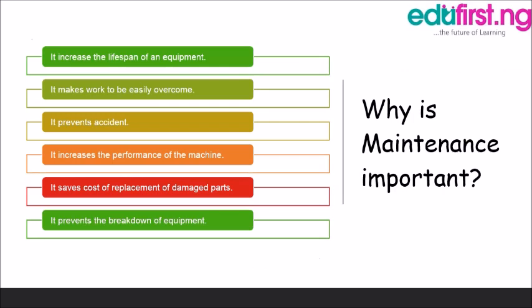Why is maintenance important? Maintenance is important because: it increases the lifespan of equipment; it makes work easier to carry out; it prevents accidents; it increases the performance of the machine; it saves the cost of replacing damaged parts; and it prevents breakdown of equipment.